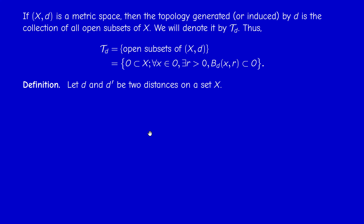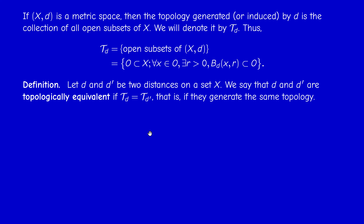Now let us see what happens — how T_D changes when D changes. In general, if D changes there is no guaranteed relation between T_D and T_D'. But it is possible that D and D' are different yet T_D equals T_D'. In this case, we say that D and D' are topologically equivalent, or that they generate the same topology. This means the collection T_D equals the corresponding collection T_D'.